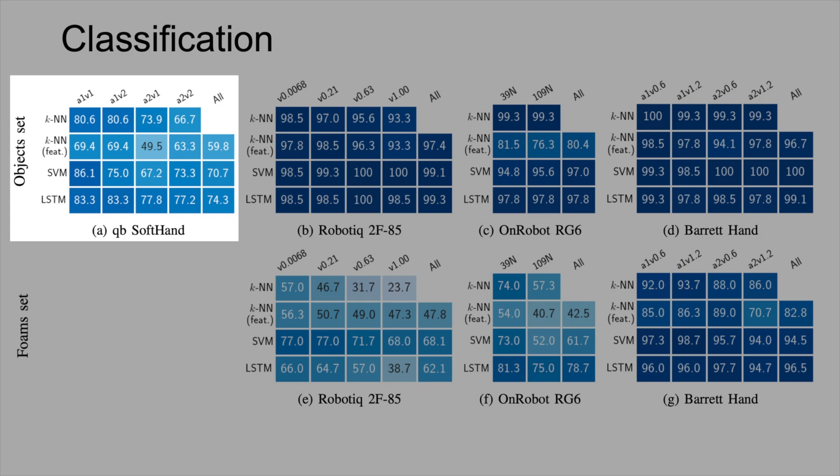We attribute this to its actuation mechanism, where the fingers passively conformed to the shape of objects, making it suitable for grasping, but less effective for discrimination.